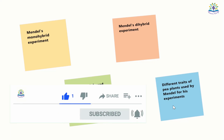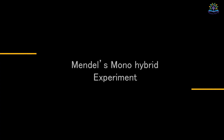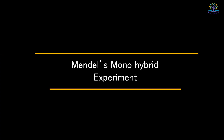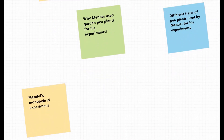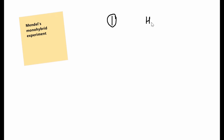Subscribe to my channel to get updates on new videos. First, we will learn about Mendel's monohybrid experiment. In this experiment, Mendel cross-pollinated plants that had only one set of contrasting traits. I'll be using the trait height of the plant to explain this experiment to you. The alleles for this trait are tall and short.